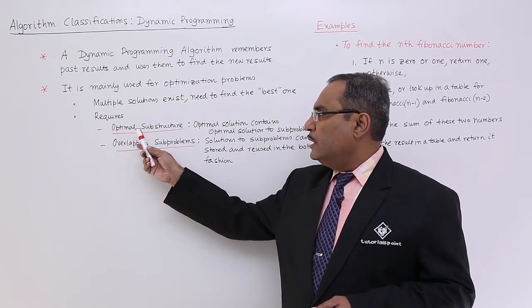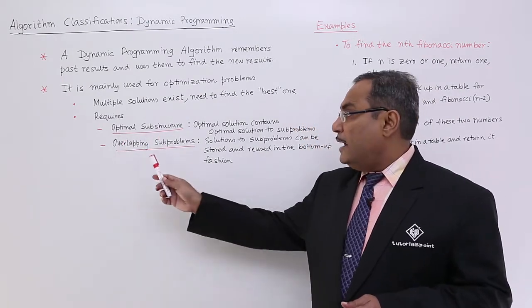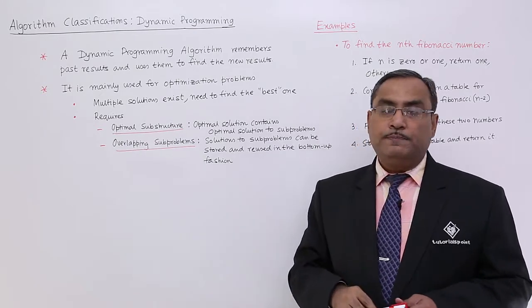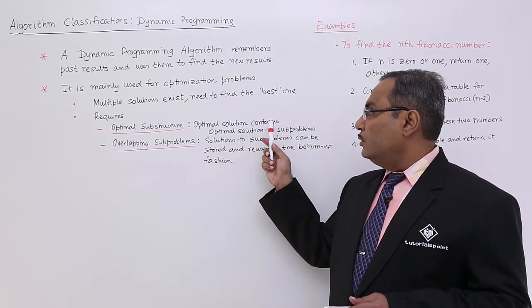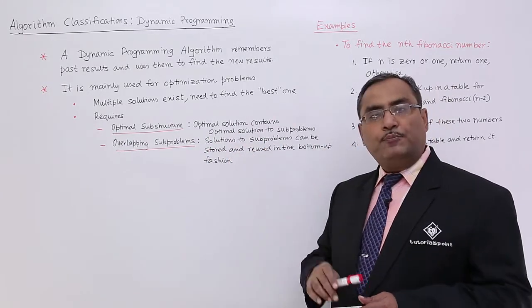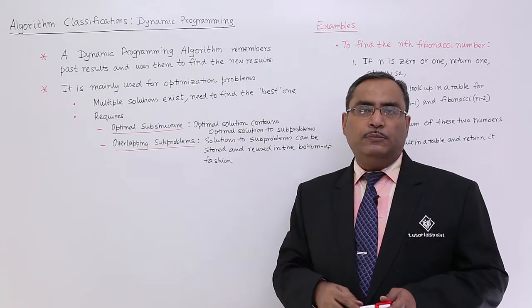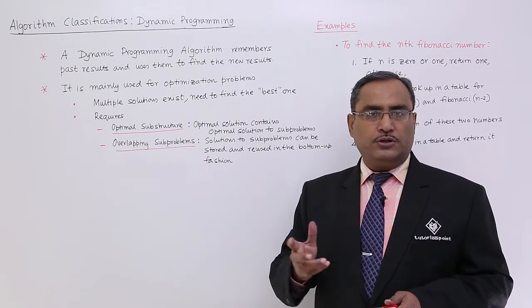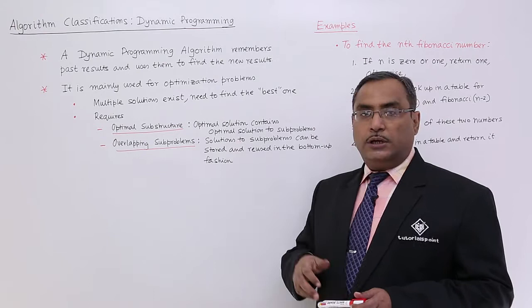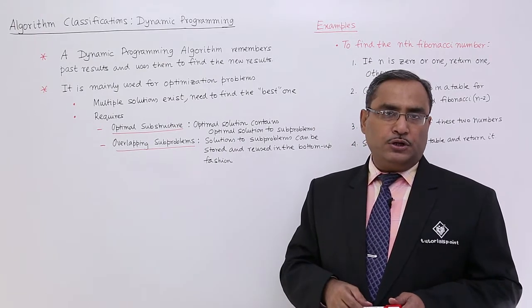It requires optimal substructure and overlapping sub-problems. The optimal solution contains optimal solutions to the sub-problems. The sub-problems will have optimum solutions, and those solutions will be used to get the optimal solution towards the main problem.